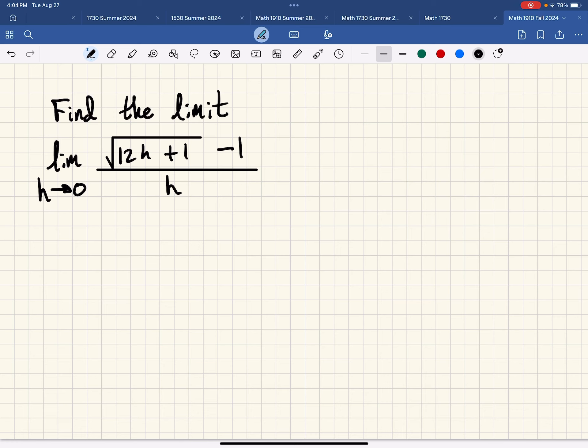And there is a kind of a trick for that and that would be to rationalize the numerator. And what does that mean? That means we would multiply the top and bottom of this expression by the conjugate of the expression in the numerator.